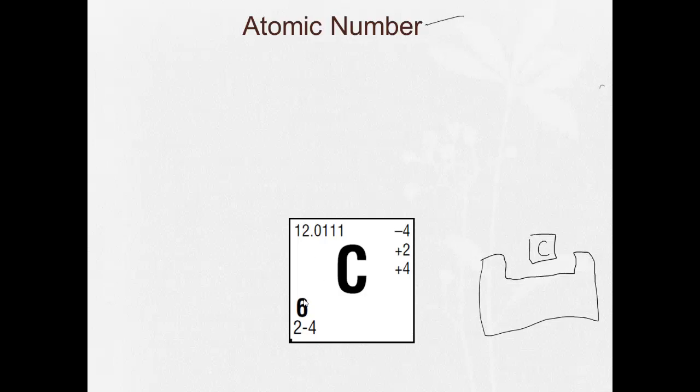Atomic number. This number here, and it tells you on your periodic table, this bold number on the lower left, is the atomic number. The atomic number tells you how many protons are in an atom of an element.